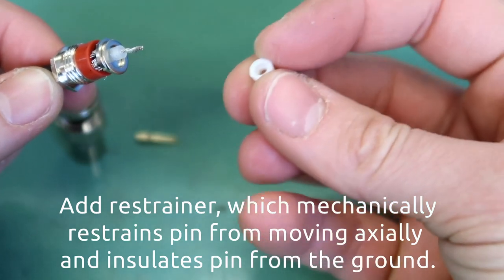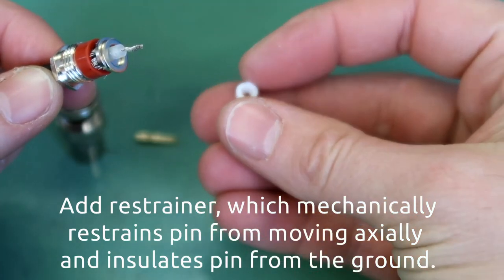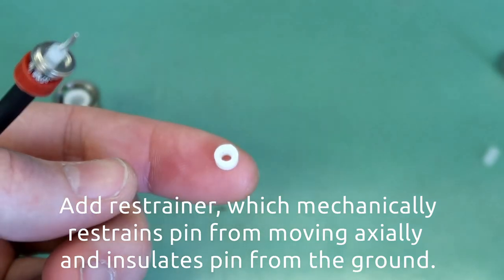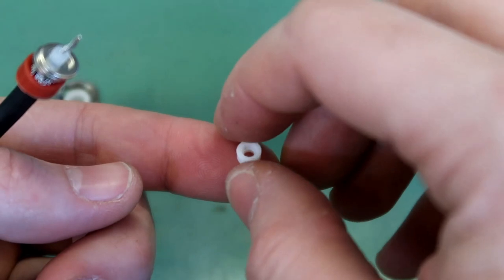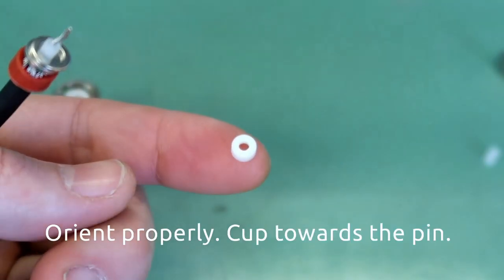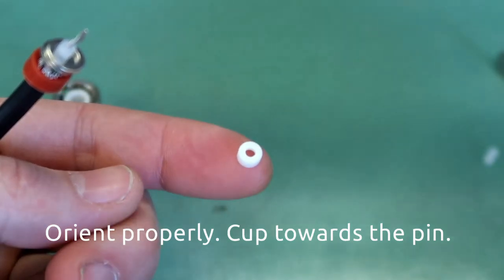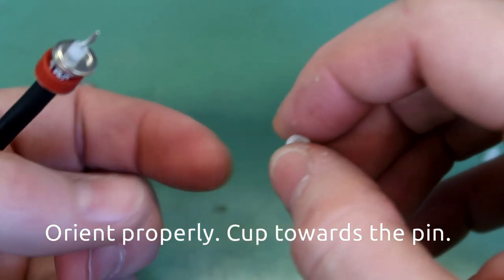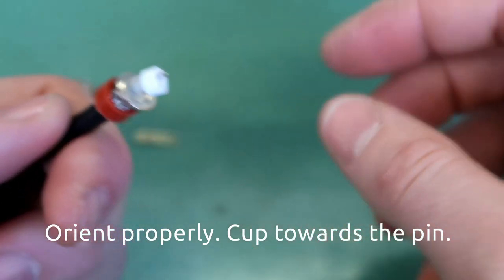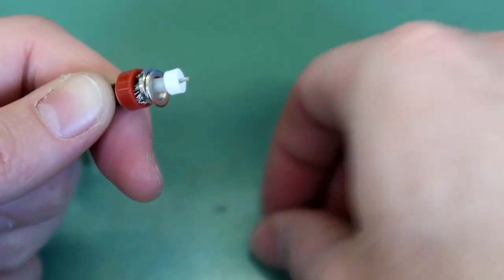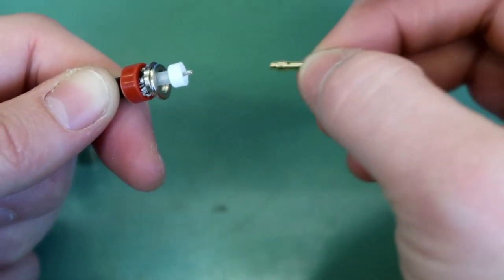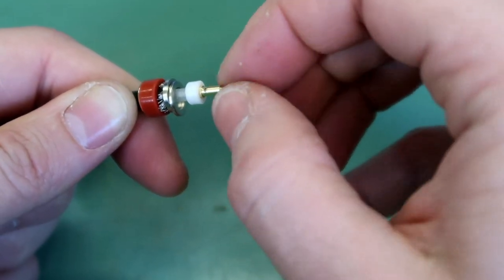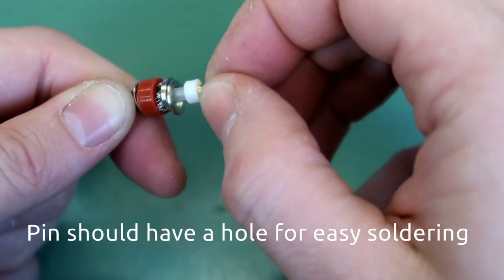The restrainer insulates the pin from the ground and acts as a rigid axial support. The pin should go into the cap and press a radial hole for easy soldering.